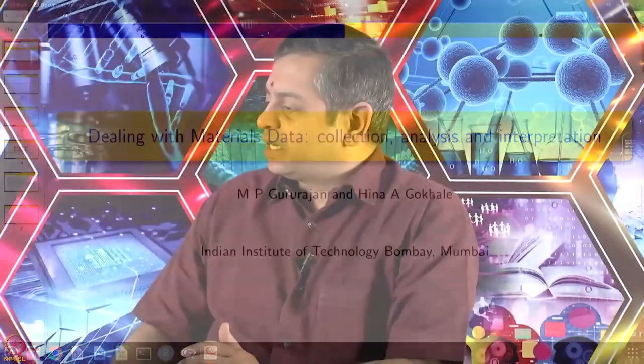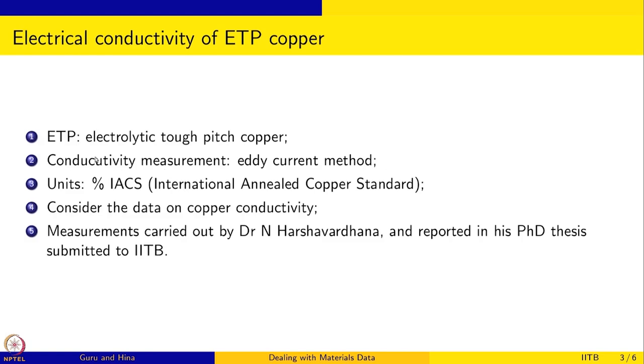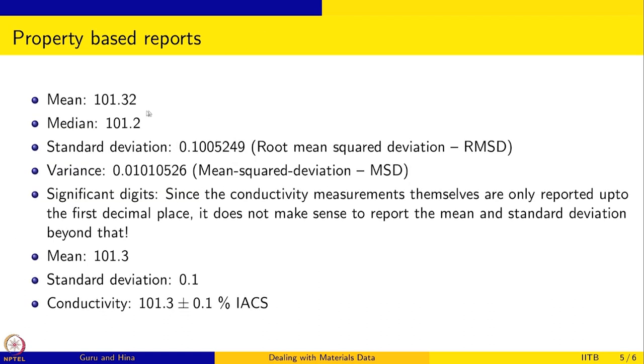This is an important point and it is very crucial. So we want to present experimental results and we need to understand significant digits and error when we present the results. So again this is ETP copper and the measurement is in terms of IACS and these are the numbers.